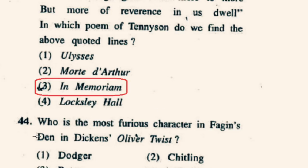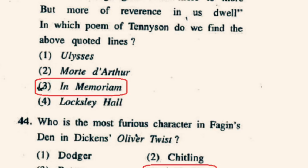Question number 44: Who is the most furious character in Fagin's den in Dickens' Oliver Twist? Oliver Twist was first published as a serial from 1837 to 1839. In the novel, Bill Sikes, a fictional character and main antagonist, can be rightfully considered the most furious character in Fagin's den. So option 4th, Bill Sikes, will be the correct option.